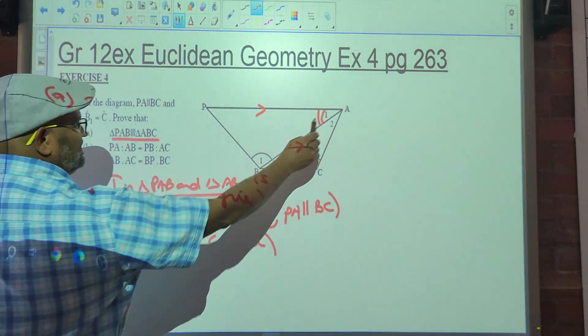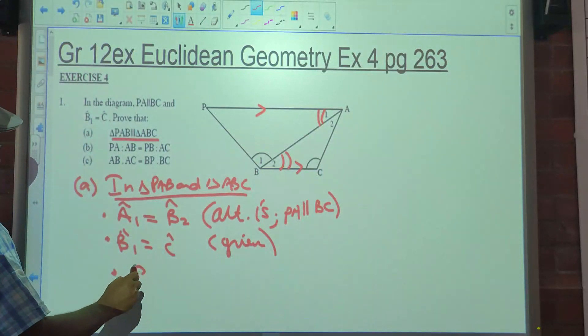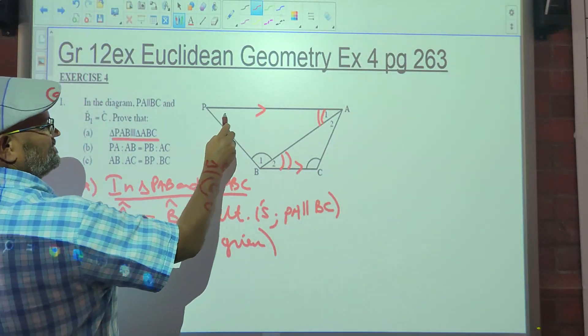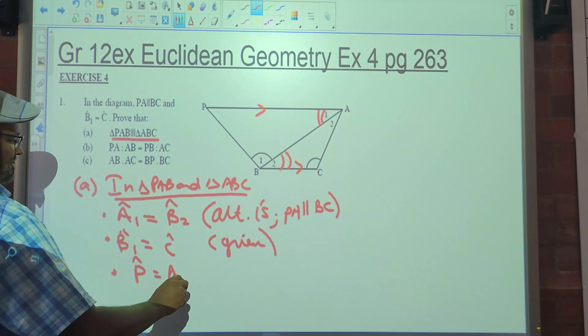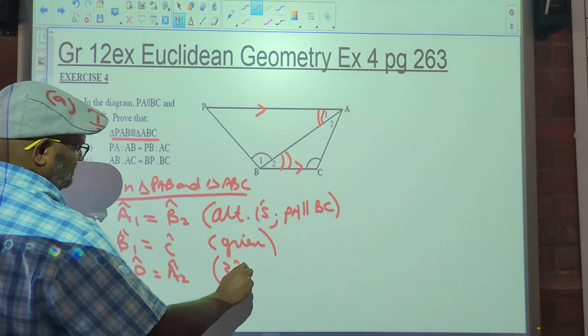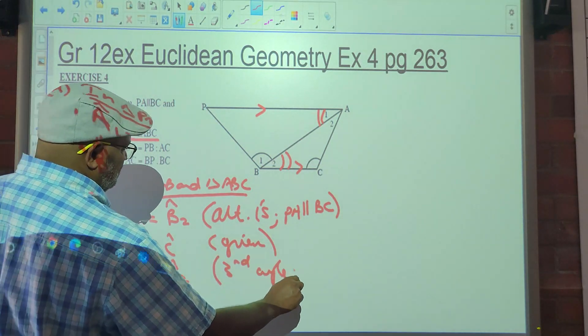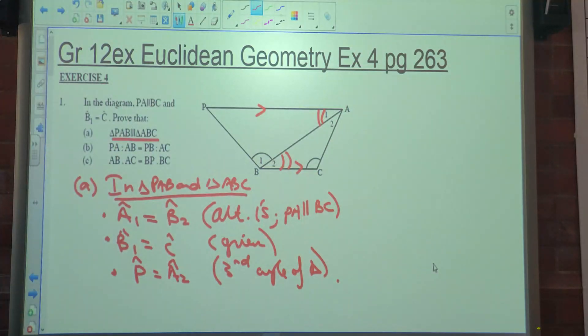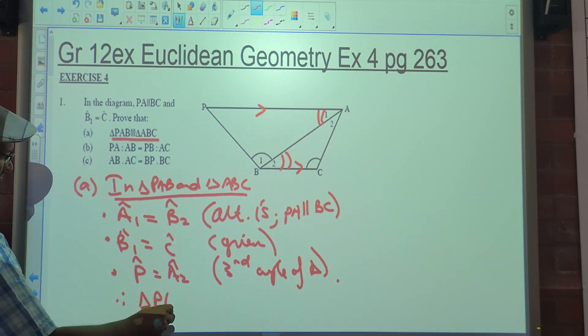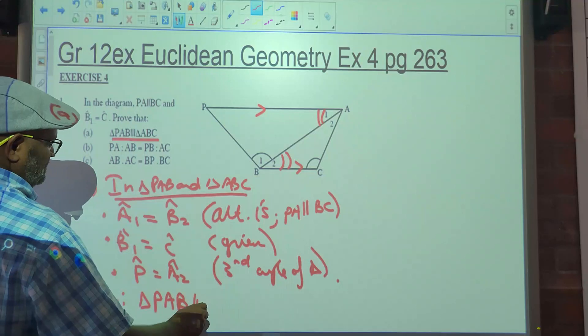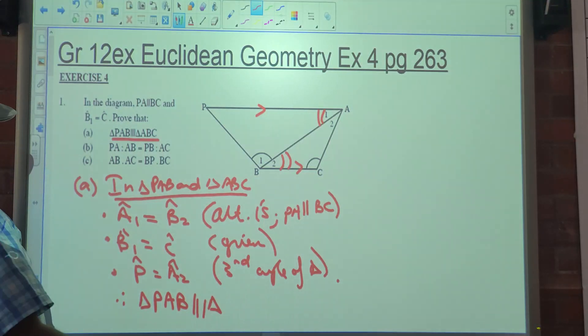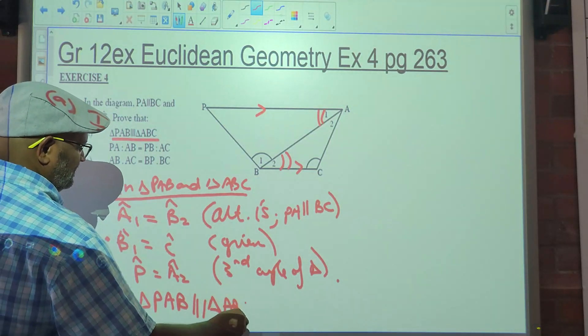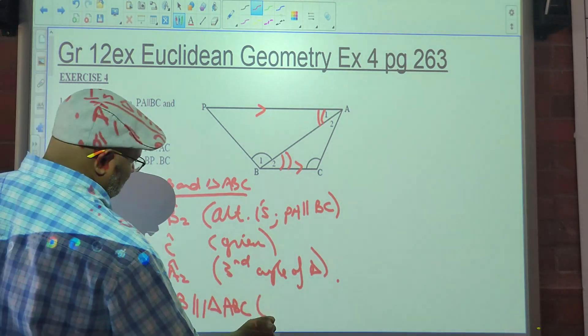Why can we say angle A1 is equal to B2? A1, you guys are grade 12 now. You're getting there. Why is that the case? Alternate angles. Is that enough to conclude similarity? Yes. Therefore, triangle PAB is similar to triangle ABC. Why? Angle, angle, angle.